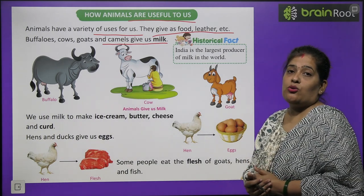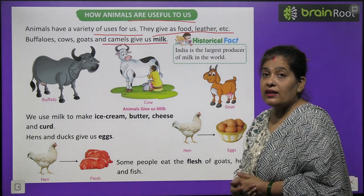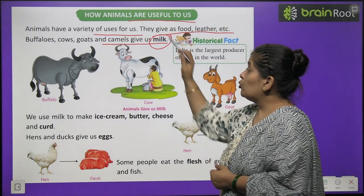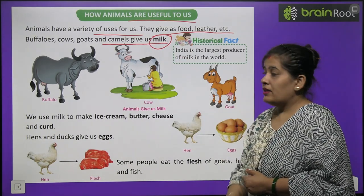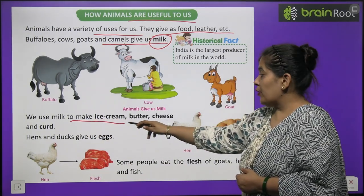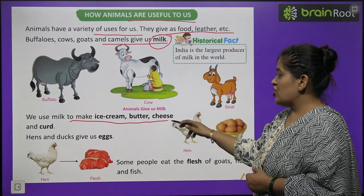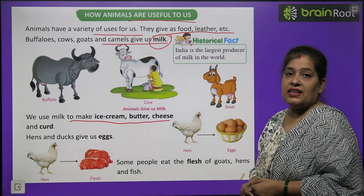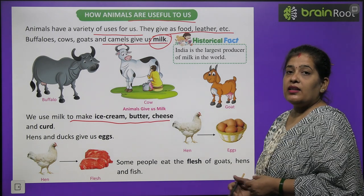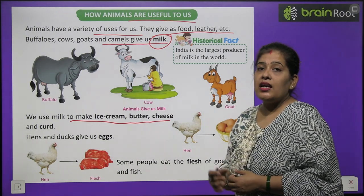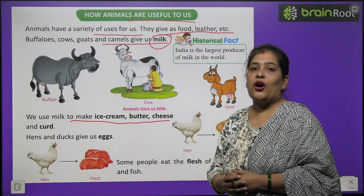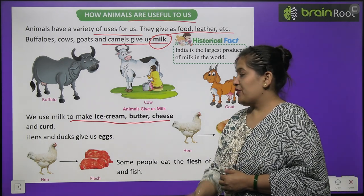Buckri aur oonth hame milk dete hai. We use milk to make ice cream, butter, cheese and curd. Aur doodh se hum kya banate hai? Dahi, makhan, paneer aur ice cream banate hai.